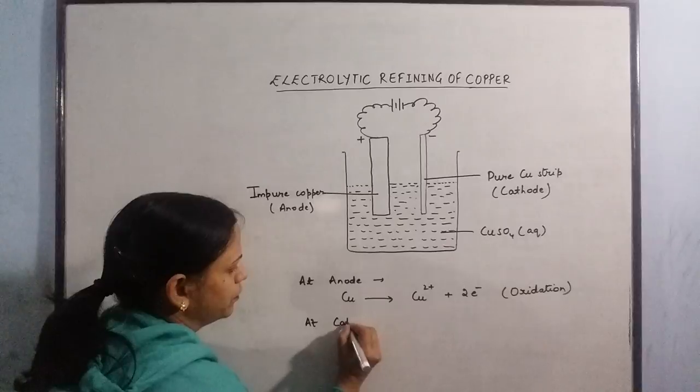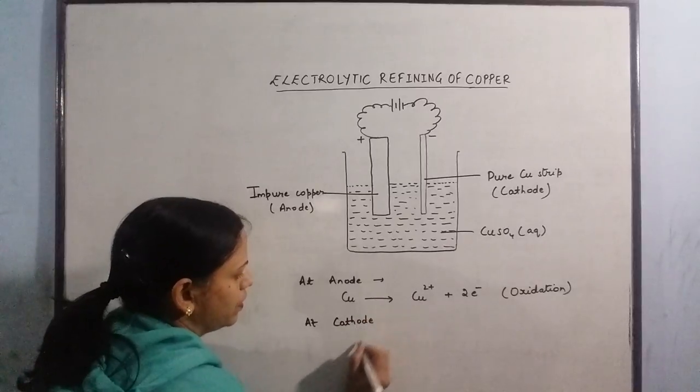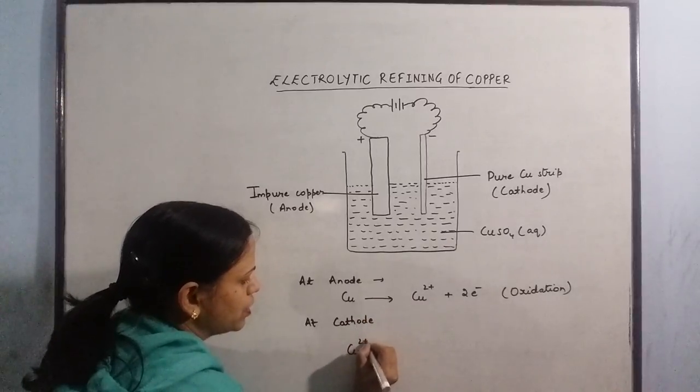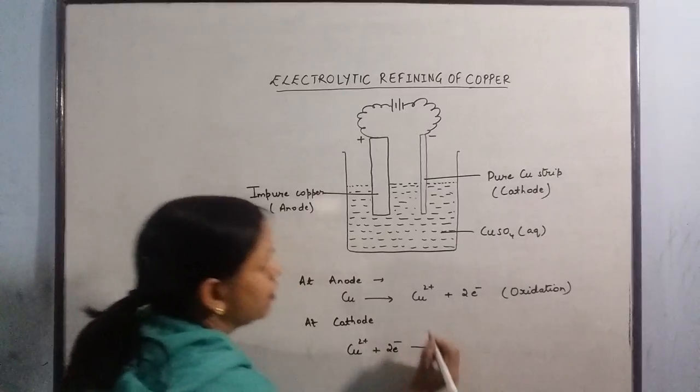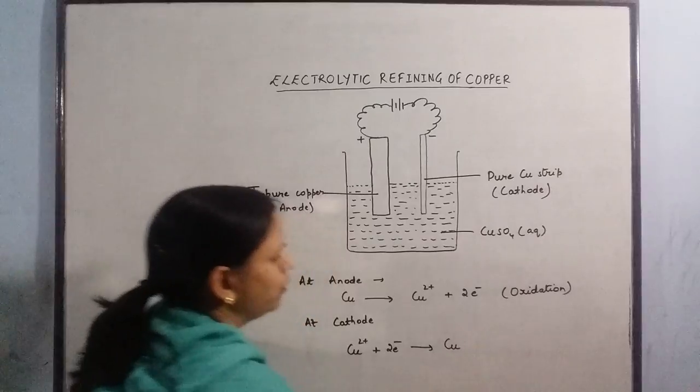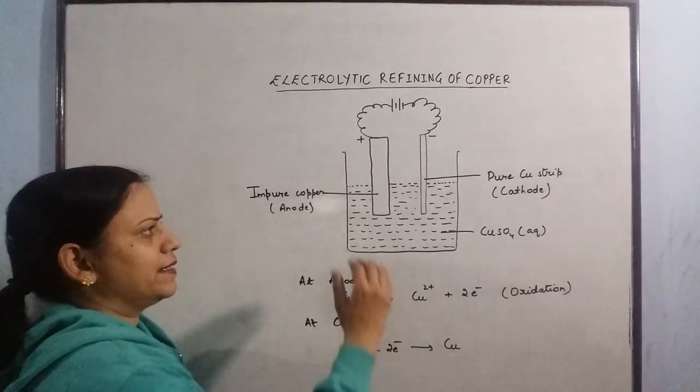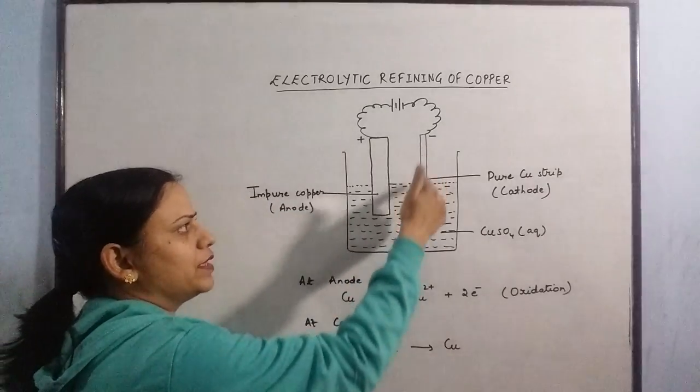At cathode or the negative electrode, the copper ions from the solution start gaining electrons coming through the circuit and they get converted back to copper metal and it starts getting deposited on this strip.